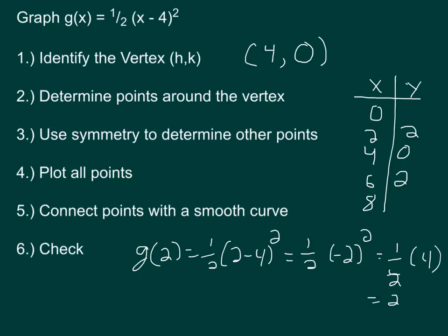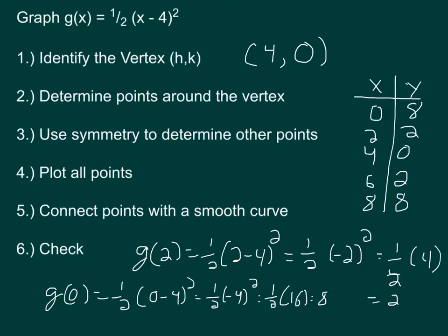And then I do the same thing with g(0). If I do g(0), that's going to be (1/2)(0 - 4) squared, which is (1/2)(-4) squared, which is 1/2 of 16, which is 8. So (0, 8) is going to be a point, and so will (8, 8). I've determined some points around the vertex and I've used symmetry to determine those points.